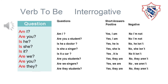Is she a singer? Yes, she is. No, she isn't. Is it a car? Yes, it is. No, it isn't. Are you students? Yes, they are. No, they aren't. Are we singers? Yes, we are. No, we aren't. Are they students? Yes, they are. Or no, they aren't.